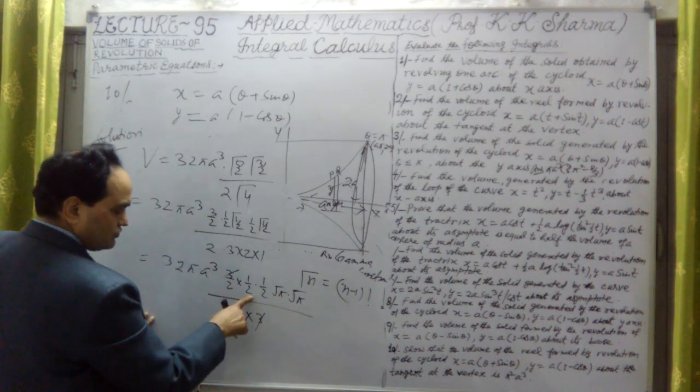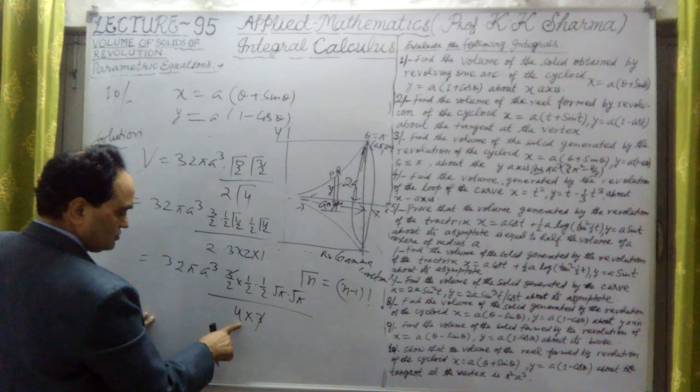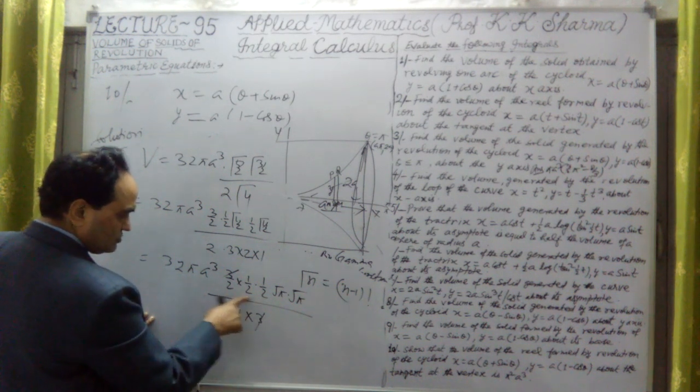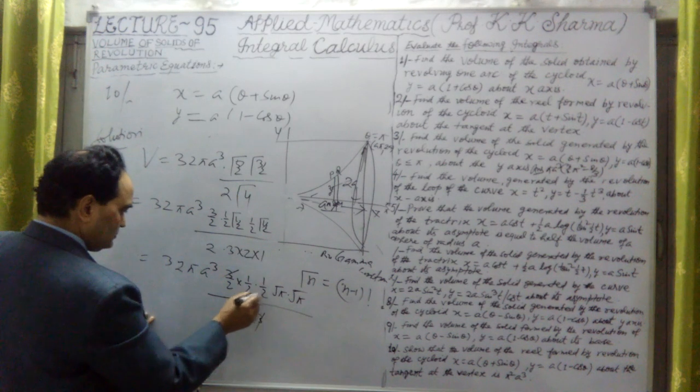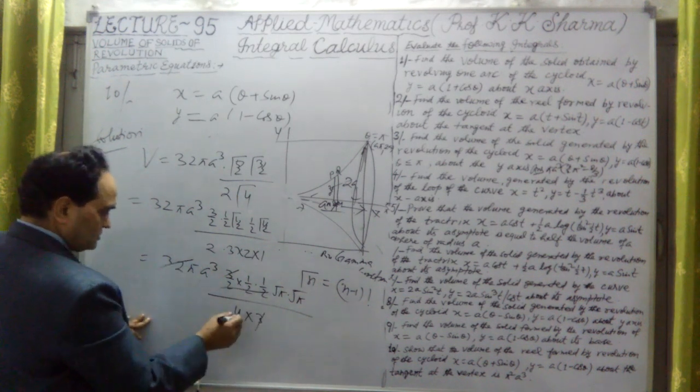2 to the 4, 4 to the 8, 8 to the 32. But this will you multiply to this 4, 8 into 4 is 32. Now this 32 and this 32 cancel out.